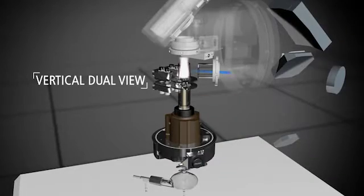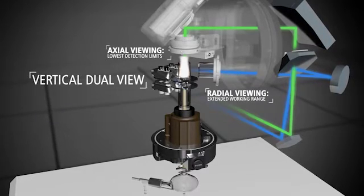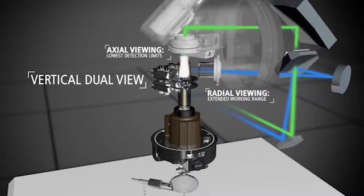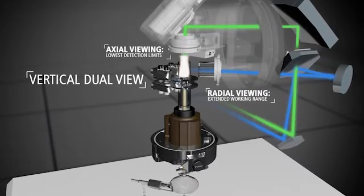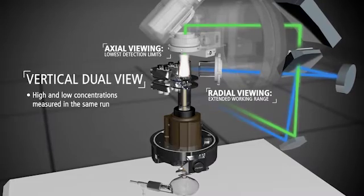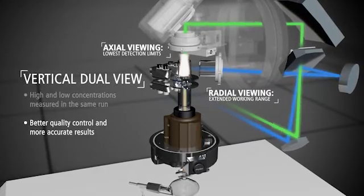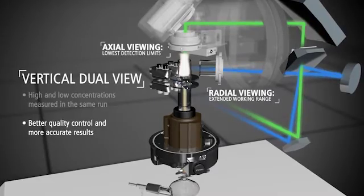Laboratories can also benefit from the ability to run in radial, axial, or an attenuated mode for maximum flexibility and linear range capabilities. This minimizes the need for additional sample dilution while enabling high and low concentration measurements in the same run. This ultimately delivers better accuracy and quality control with fewer costly reruns.